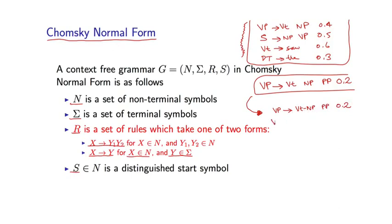Then I have a second rule which says a VT-NP goes to a VT followed by an NP with probability 1.